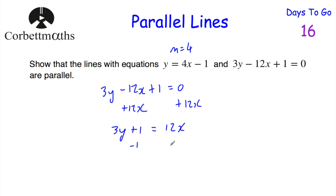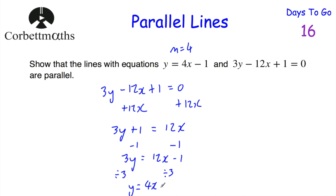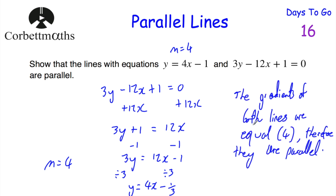Now we divide everything by 3. That gives us y equals 4x minus one-third. The gradient of this line is 4. So the gradient of the first line equals 4, and the gradient of the second line equals 4. Therefore, the gradients of both lines are equal to 4, and therefore they are parallel. And if you got that, well done.